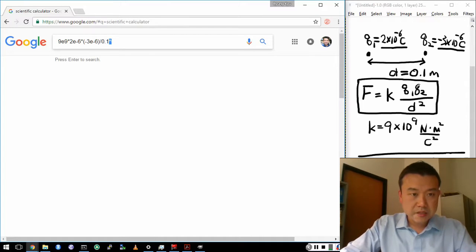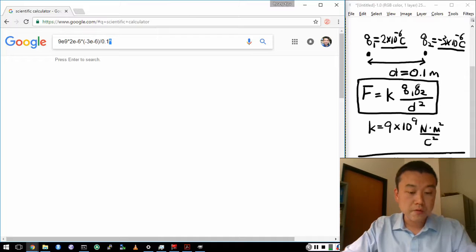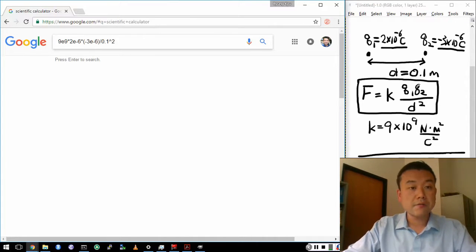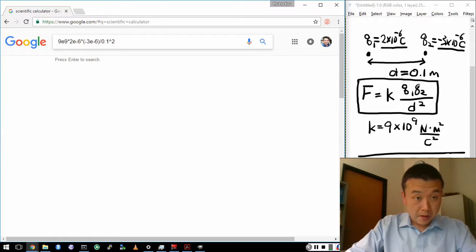Now this symbol here. This is what you get if you press the shift and number 6 on most keyboards. It's called a caret. This stands for raised to the power of. So this does the raised to the power of 10. It does the squaring. Alright.